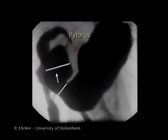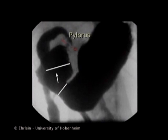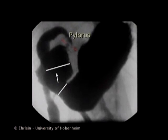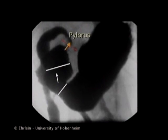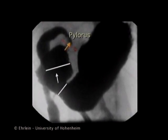When the peristaltic wave moves over the middle of the antrum, the pylorus opens and small quantities of gastric chyme are swept into the duodenum. This is the emptying phase.